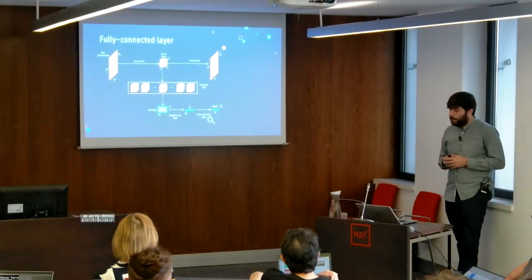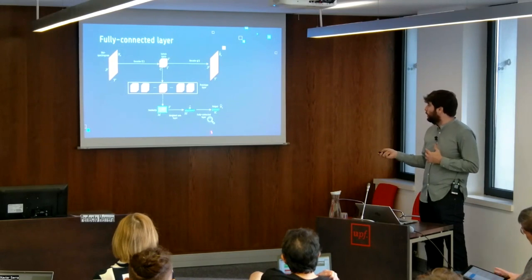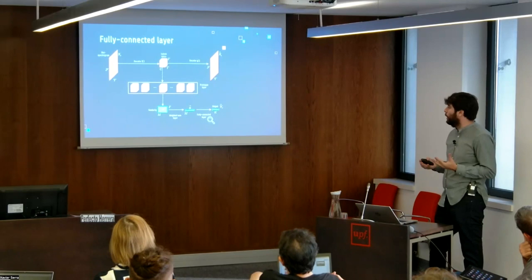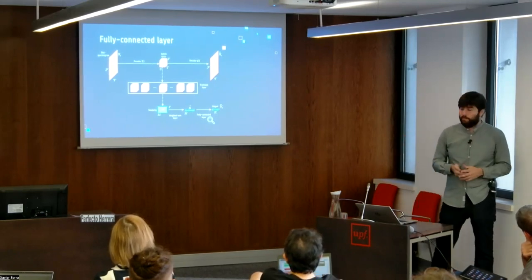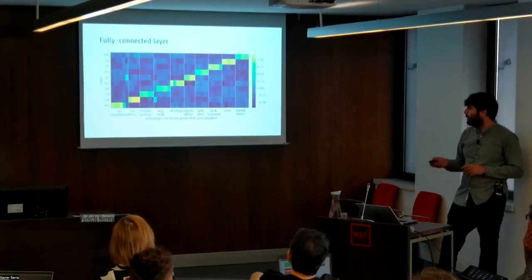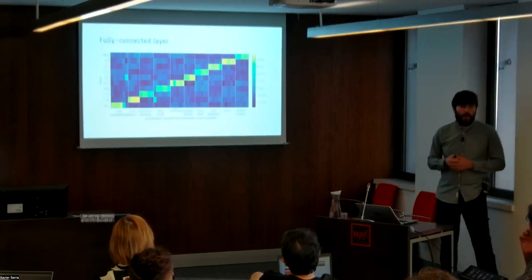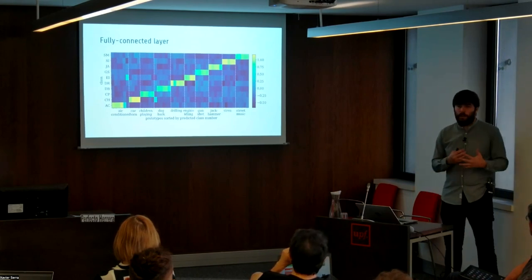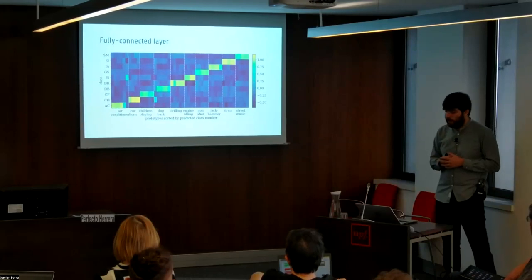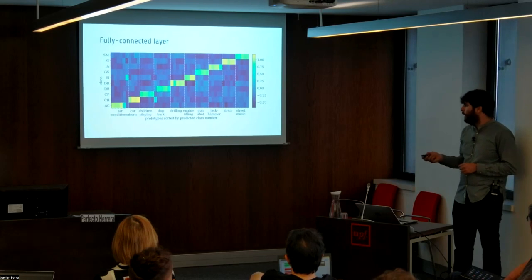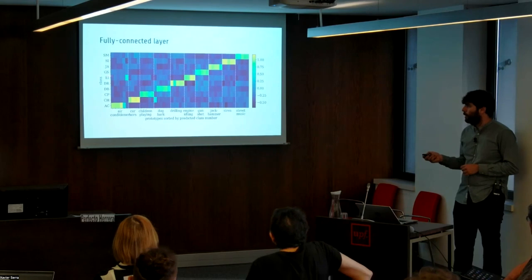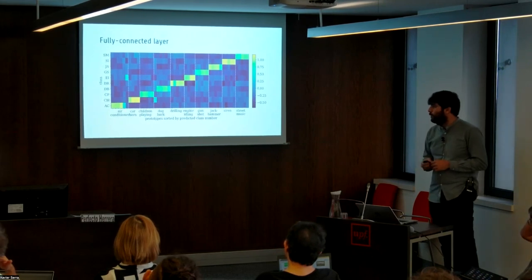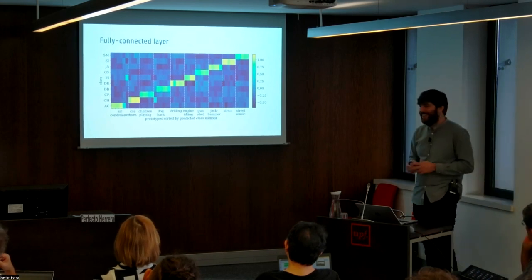The weights of the fully connected layer can also be inspected. This layer transforms the similarity measure into the output, and analysis of these weights contributes to the interpretability of the network — we are able to tell which prototypes are more representative of which classes. The x-axis represents the prototypes ordered by their corresponding classes, and the y-axis represents the target class. Most of the prototypes are connected to the corresponding class, with only two exceptions illustrating acoustic similarities: the last prototype of air conditioner is highly connected to engine island, and the first prototype of dog bark is highly connected to children — which also makes some sense.